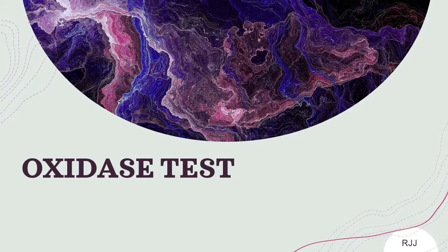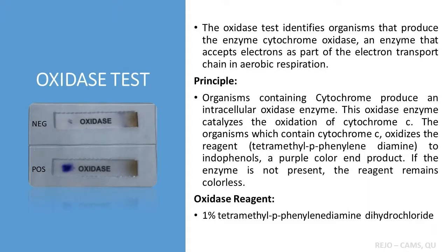In this video we are going to look at how to perform the oxidase test. The oxidase test identifies organisms that produce the enzyme cytochrome oxidase, an enzyme that accepts electrons as part of the electron transport chain in aerobic respiration.